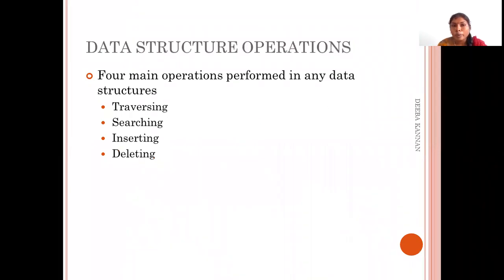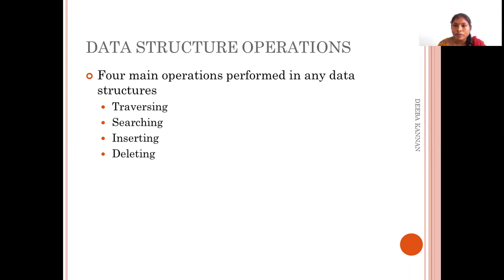These are the four main operations that can be performed in any data structure. The first is traversal — whenever you take a data structure, you should know how to traverse the data. Traversal means visiting each and every element only once. For example, if I have 10 cities, I have to visit all 10 cities only once — that is called traversal.